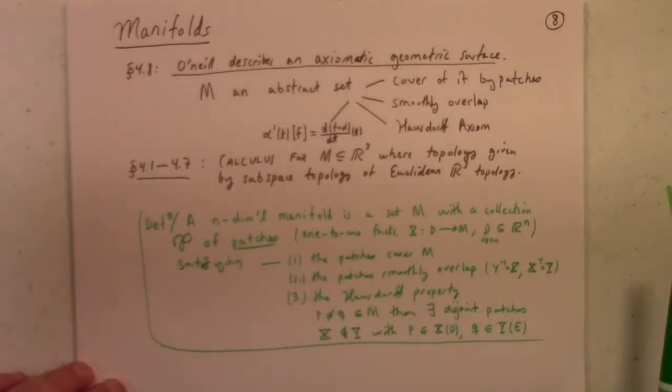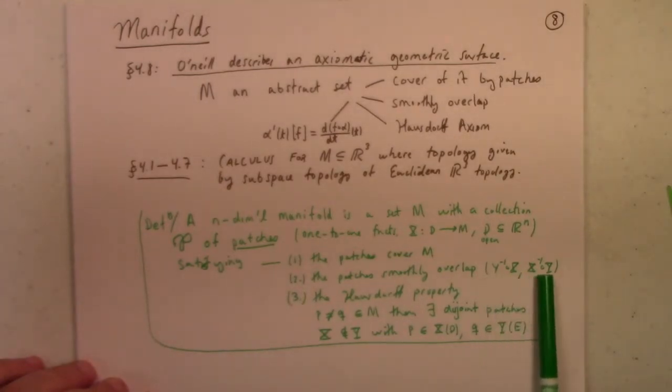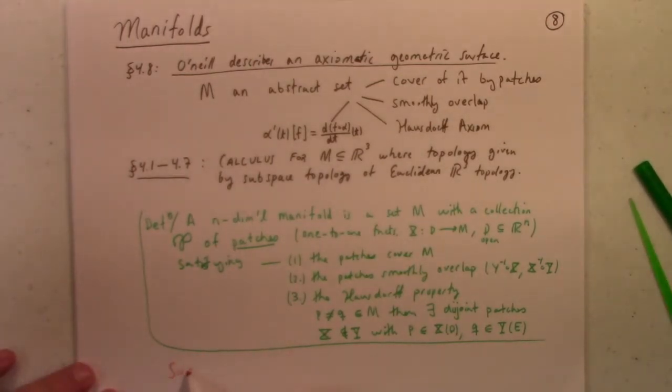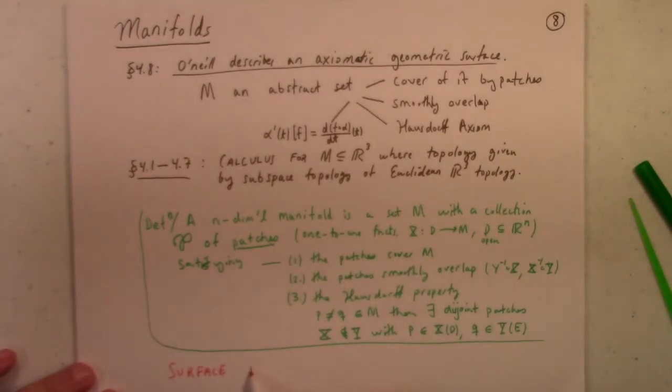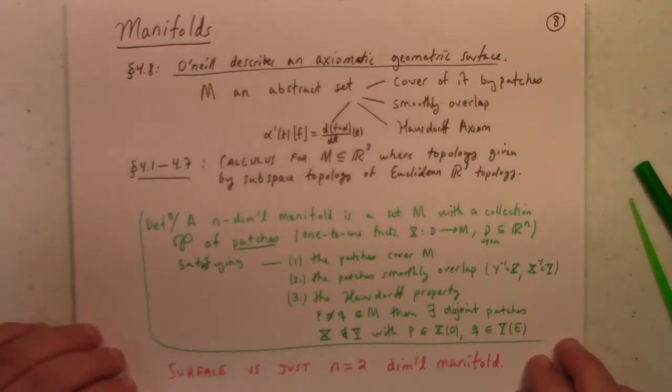Essentially, though, an n-dimensional manifold is a set that locally looks like R^n. And we can study the smoothness of functions by looking at local coordinate representatives in the same way that we've been looking at the smoothness of functions on a surface by looking at local coordinate representatives. So, you know, in short, surface is just an n equals two dimensional manifold. Or if you want to turn the tables, you could say a manifold is just an n-dimensional surface.